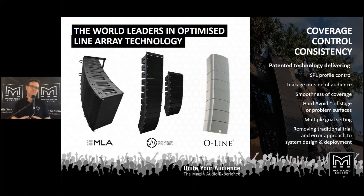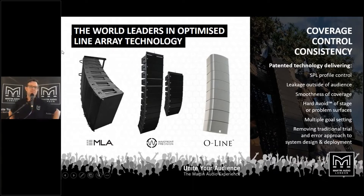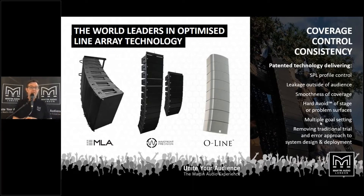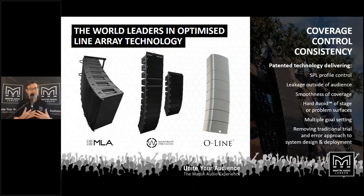What we are trying to do is get the most accurate and consistent coverage out of a line array hang, and we do this by having three different SPL profile controls. The first is leakage — we don't want sound to go outside of the audience area. The second is smoothness of coverage within the audience area. And then our hard avoid technology, which allows a user to define an area where sound really must not go. One of the very unique things to Martin Audio is our ability to set these three goals independently and have the sound system perform all of them at the same time — that's our multiple goal setting.